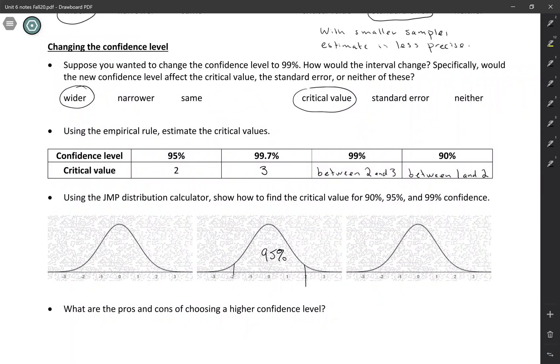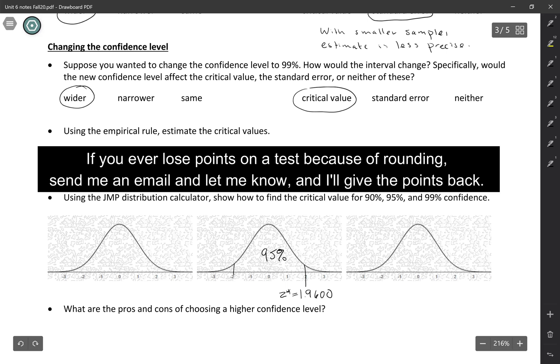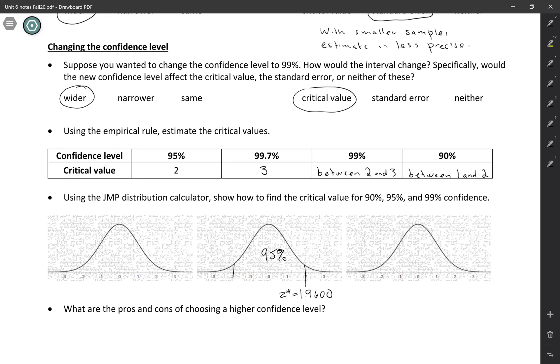So the multiplier that we'll use for 95% confidence is 1.96, and the symbol that we use for that critical value is Z star. So Z star is 1.9600. Again, keeping four decimal places just to make sure we get full credit. So let's do the one for 90% now.